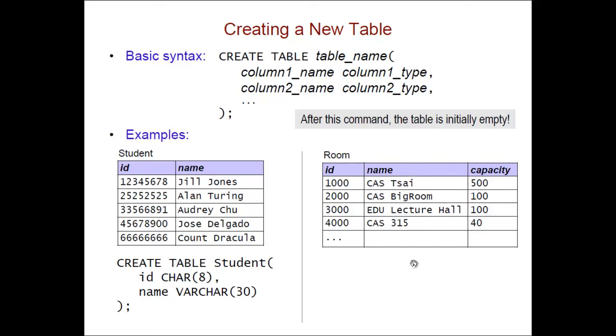For the room table which has three columns the command to create it looks like this: CREATE TABLE Room, open paren, name of the first column, its type, notice these IDs are only four digits long so it's CHAR(4), second column name which is name and its type, comma, third column which is capacity, its type which is integer and then close paren, semicolon.